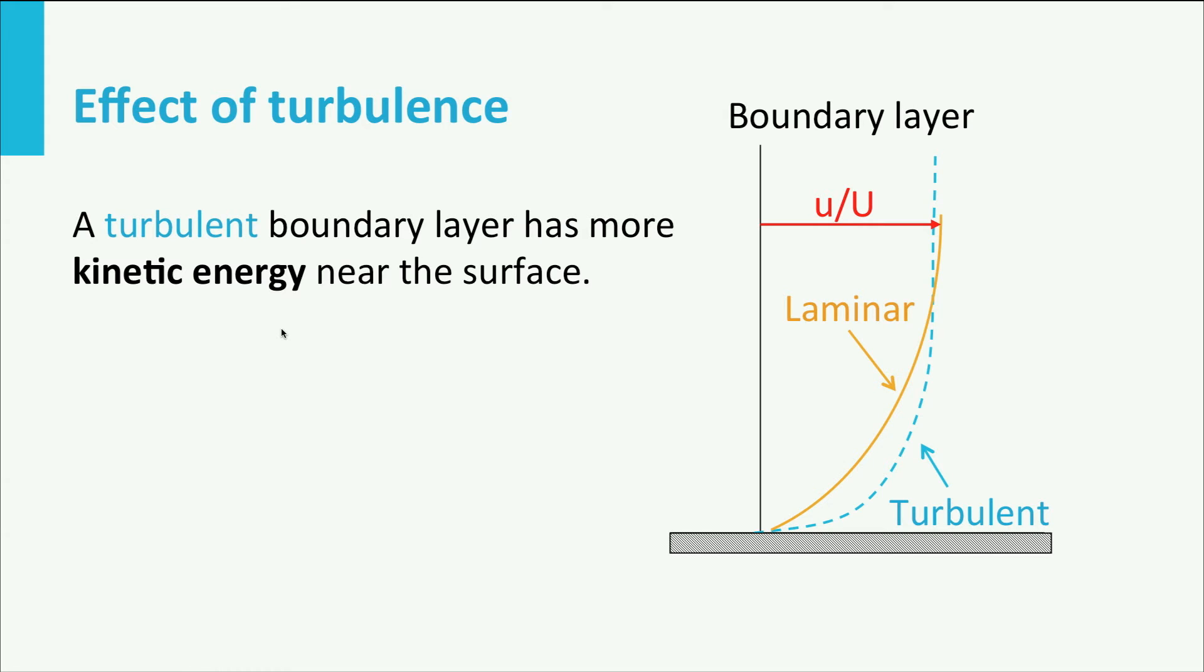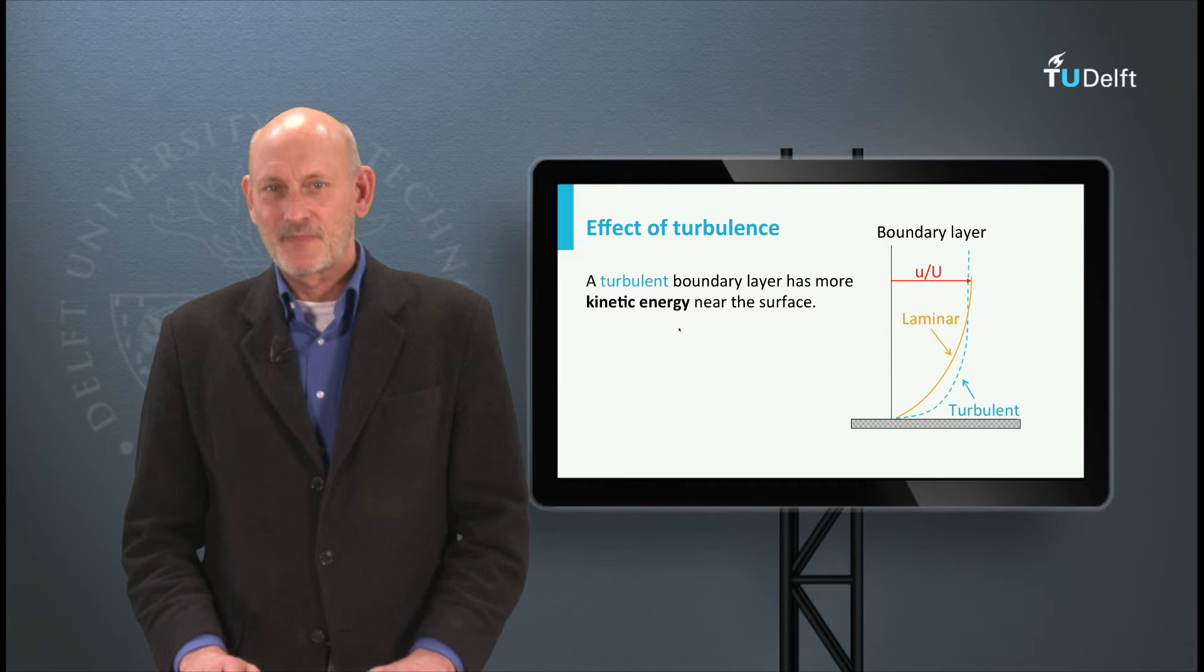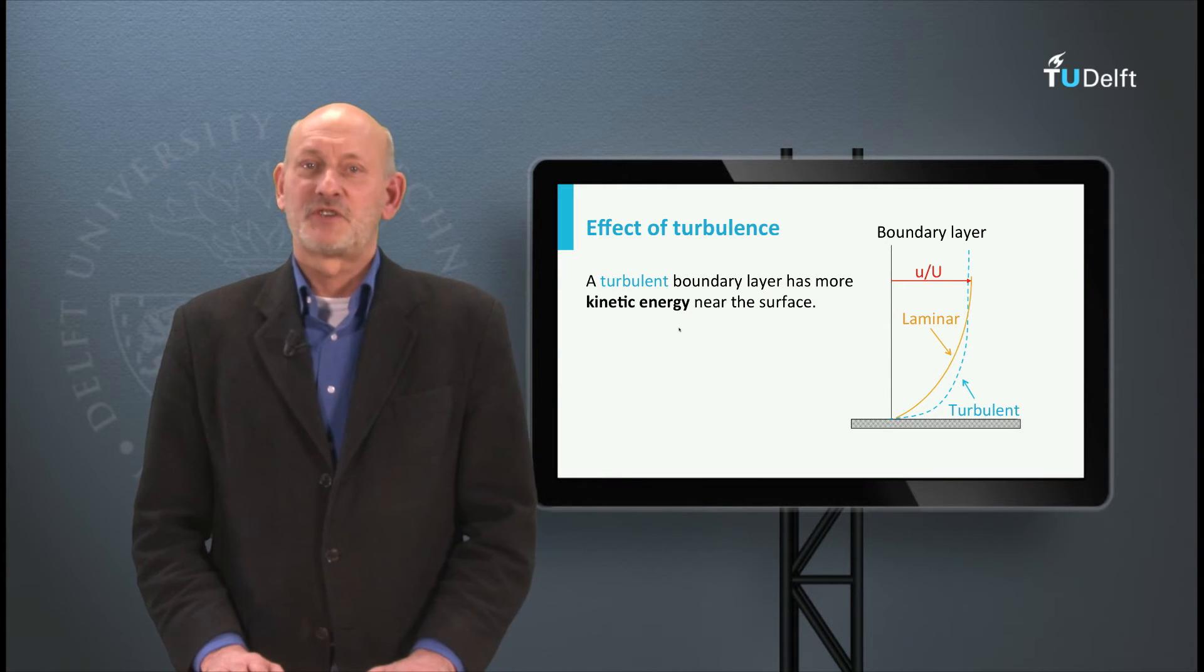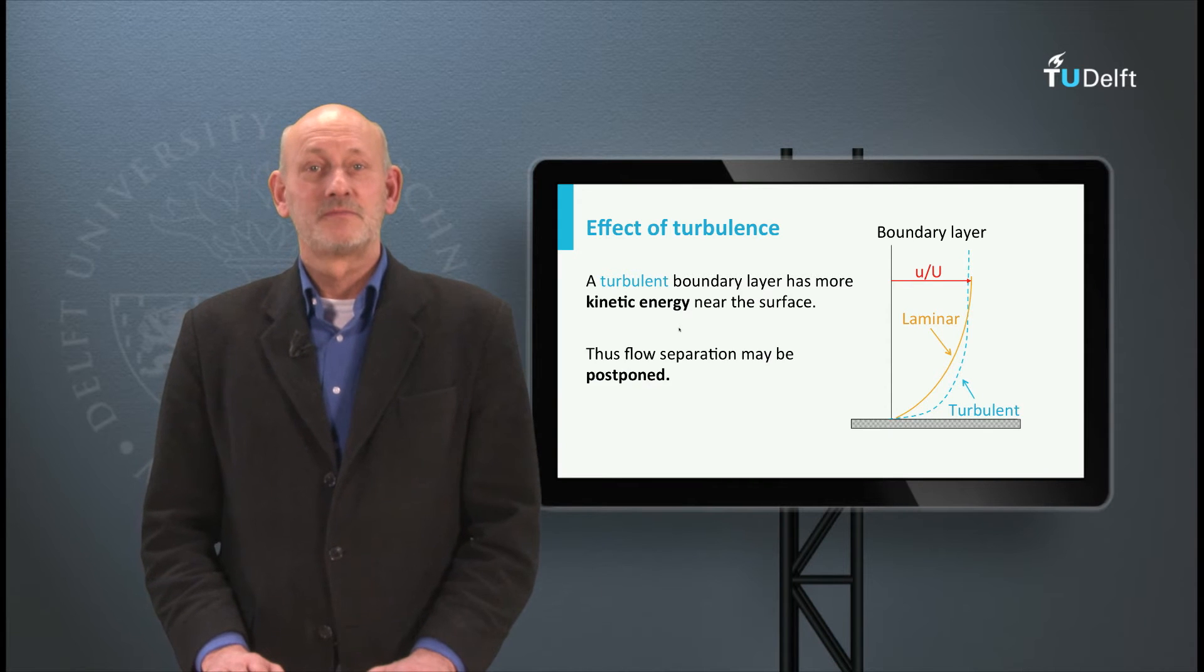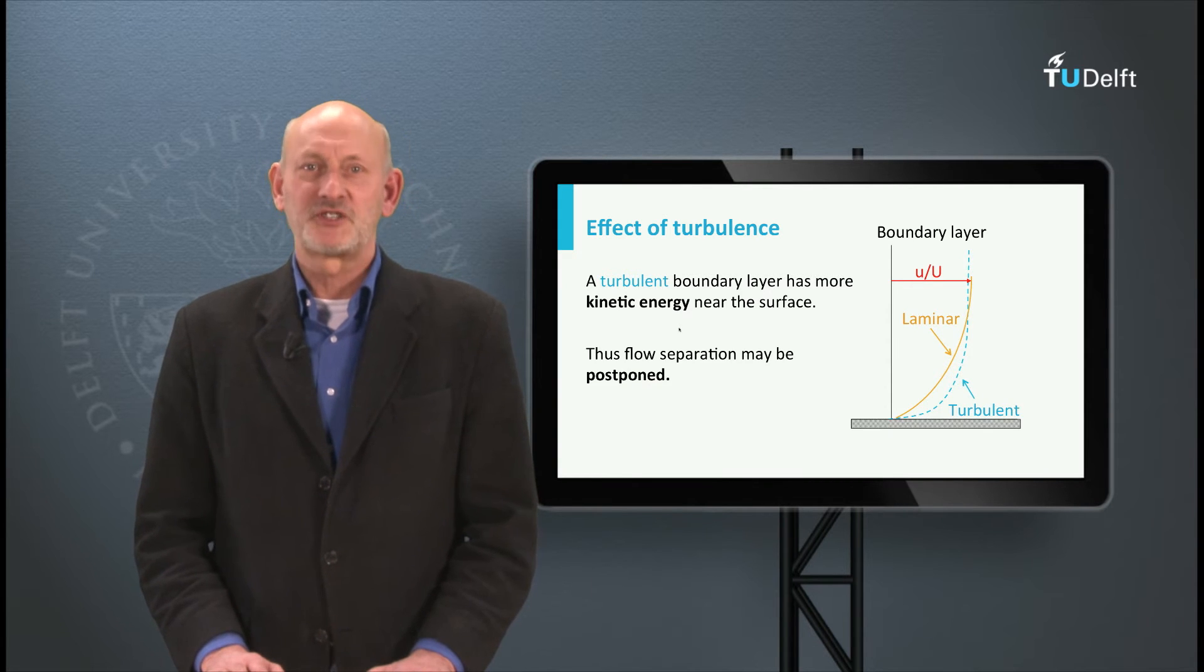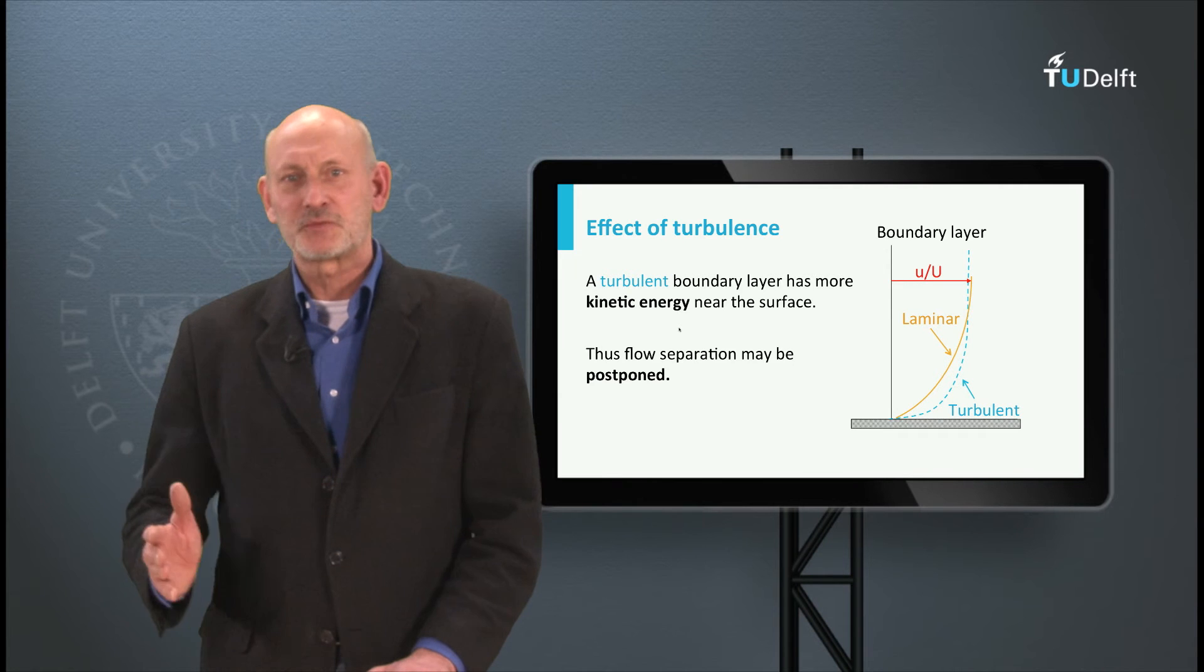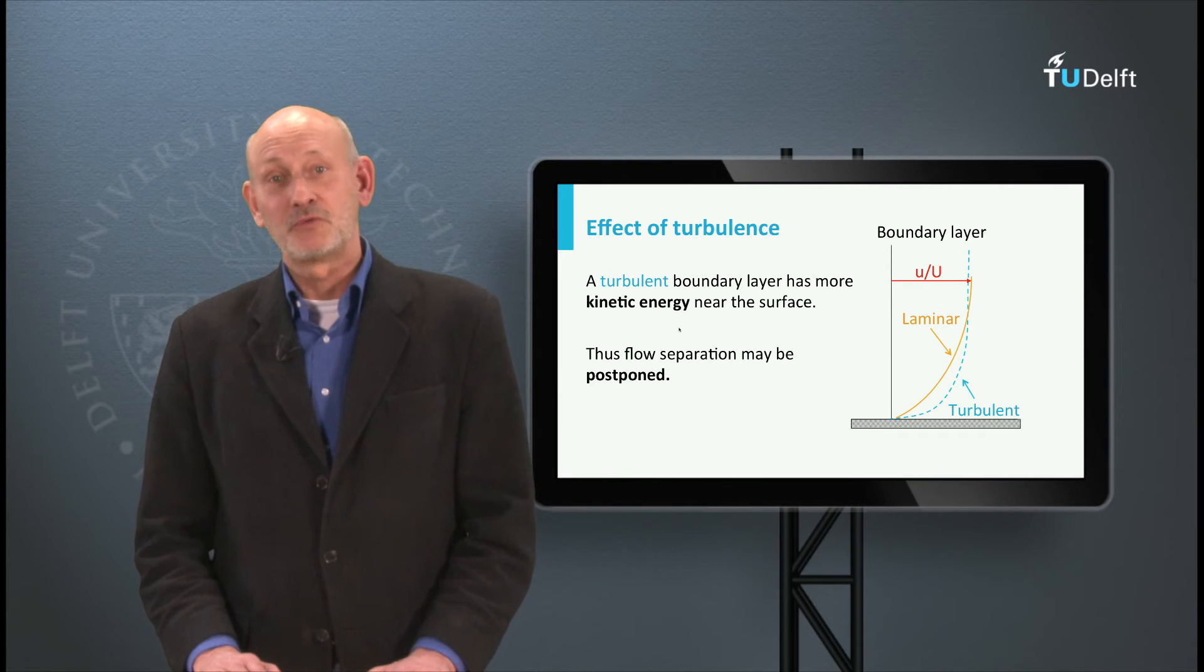Look at the boundary layer with the laminar and the turbulent profile. Due to the fact that the fluid particles in the turbulent boundary layer move chaotically, there is much more energy exchange between the outer part of the boundary layer, where there is much more kinetic energy, and the part of the boundary layer close to the wall. You can see that there is more velocity near the wall, enough to endure more friction and to go against an adverse pressure gradient and to postpone separation.